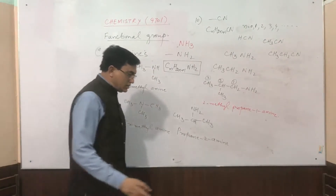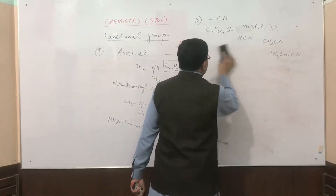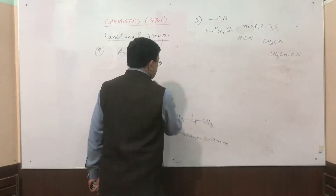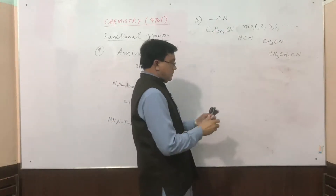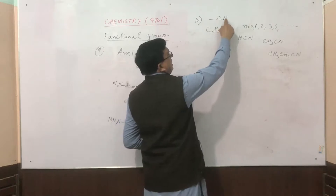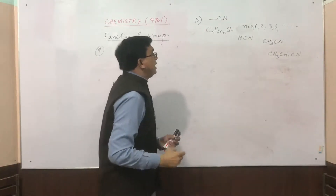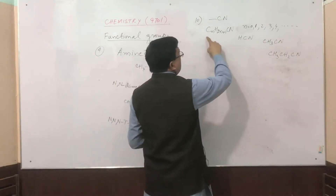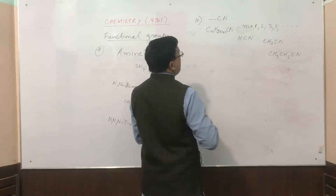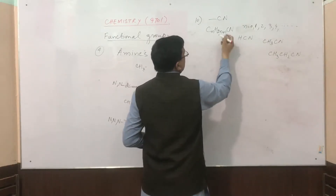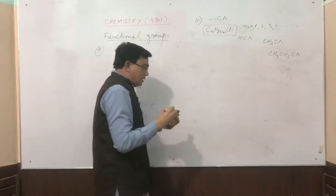This is how we name the amines. Depending upon the functional group, we can differentiate between primary, secondary, or tertiary amines. The last functional group is nitrile. The nitrile functional group is represented by CN, and the general formula for a nitrile is CnH2n+1·CN.